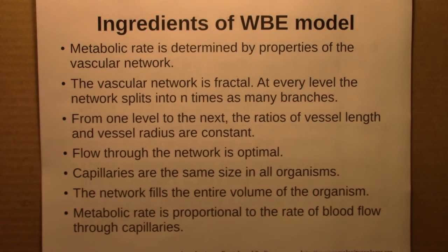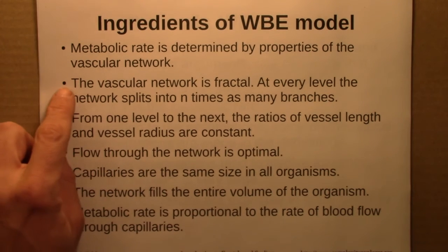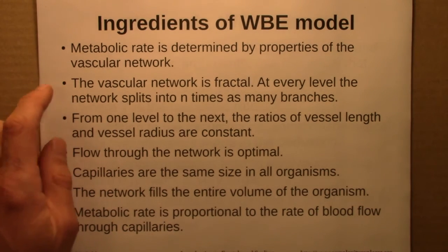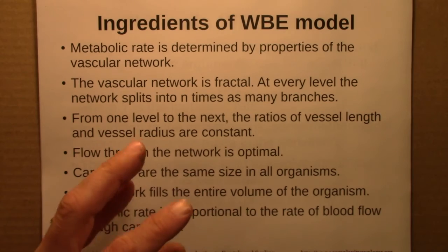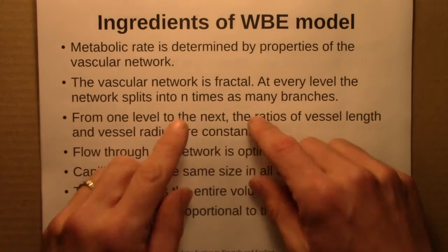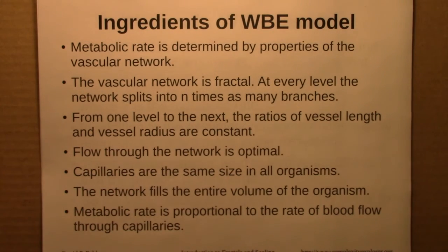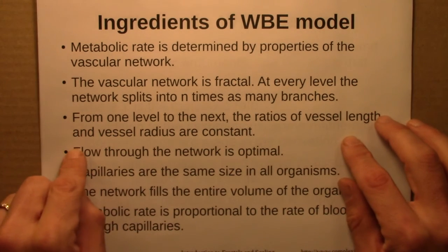An explanation was put forth in the late 1990s by West, Brown, and Enquist. The ingredients of their model are as follows: metabolic rate is not about surface area, but is determined by fundamental properties of the vascular network. The vascular network is a fractal and is self-similar — at every level, every time the network branches it branches into n times more branches, and that branching number is constant across all levels. The ratios of vessel length and vessel radii are also constant from one level to another — it's scale-free.